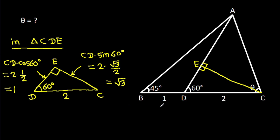Also, the complementary angle is 90° − 60° = 30 degrees. So this angle is 30 degrees, DE is 1, and CE is √3.